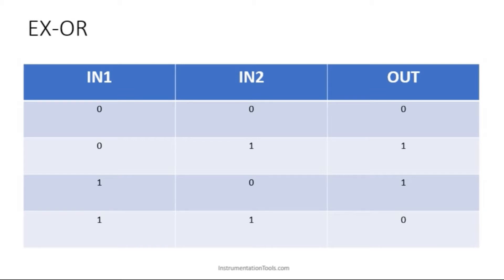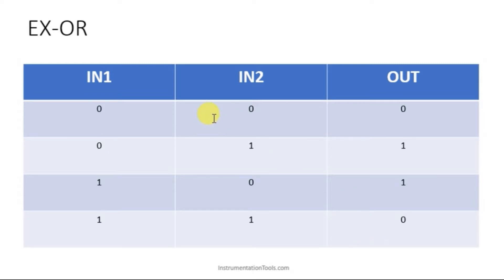In our previous session we saw the remaining logic gates in CX Programmer. In this session we are going to cover two more: XOR and XNOR. For the XOR gate, the truth table shows: if both inputs are off, output is off; if any one input is on, output is on; but if both inputs are on, output is off. This is a bit more complicated compared to the previous logic gates.